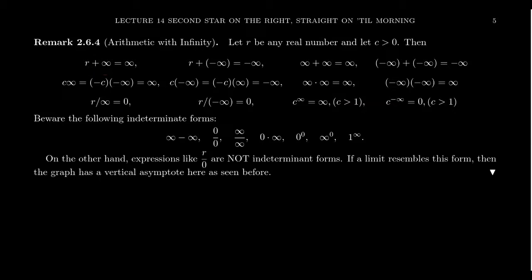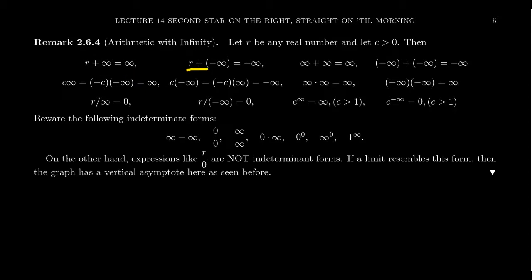These first statements I'm going to present are actually fairly safe — you can use these without any real concern. If you take any real number r, where r is any real number — positive, negative, or zero — and you add it to infinity, you can always simplify that as infinity itself: r plus infinity equals infinity. Likewise, a real number added to negative infinity gives negative infinity. This is like taking the ocean and adding a bucket of water — it's still the ocean. Infinity compared to a finite: the infinity always wins.